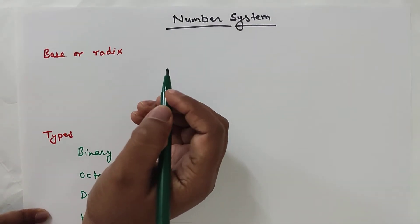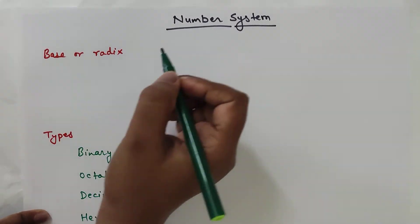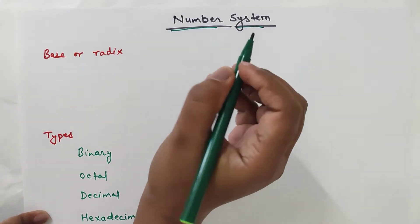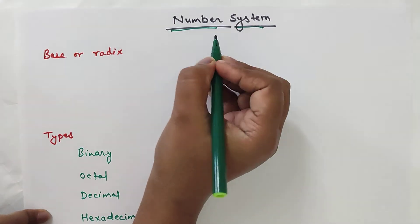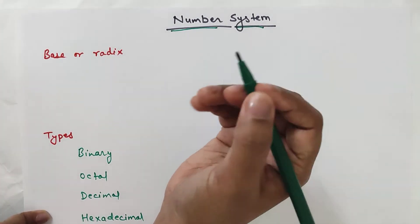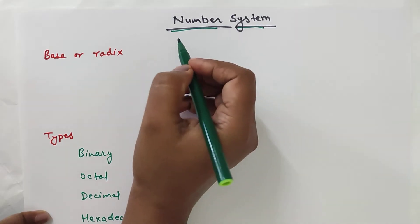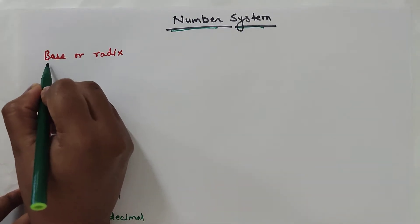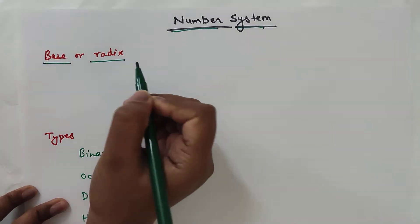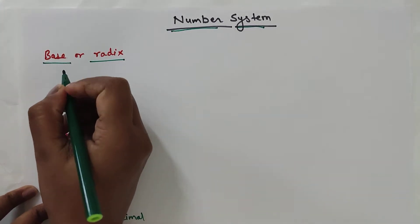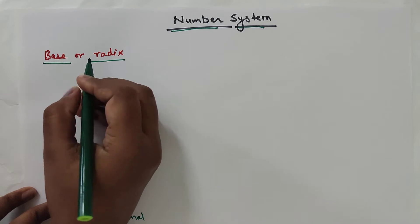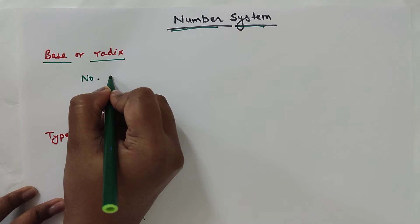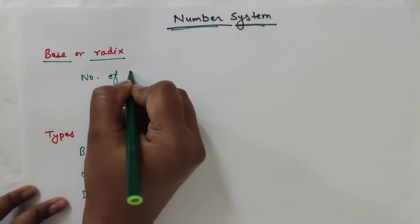Hello friends, welcome to our YouTube channel RF Design Basics. Today we are going to learn about number systems. The first thing we will learn is the base or radix of a number system. The base or radix is the number of symbols that we can use to represent a number in that number system.